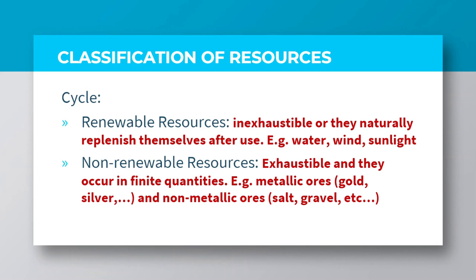To classify resources by cycle, resources are grouped into renewable and non-renewable resources. Renewable resources are those resources which are inexhaustible and naturally replenish themselves even after their use, and typical examples include water, wind, and sunlight. With non-renewable resources, they are exhaustible and they occur in finite quantities. This means these resources cannot be replaced and they need to be conserved before they become depleted. We make mention of two distinctions: the metallic ones, which include gold and silver, and the non-metallic ones, such as salt and gravel.